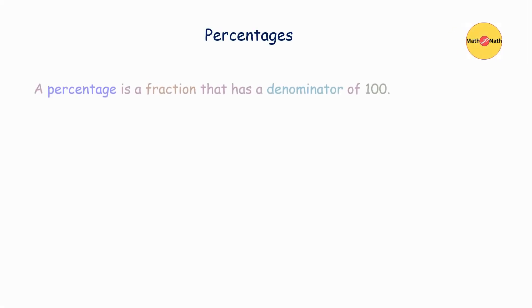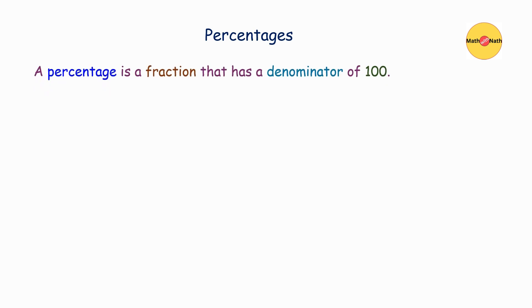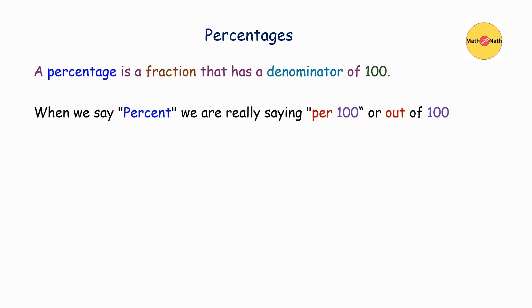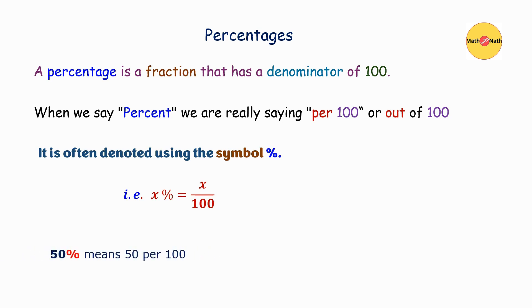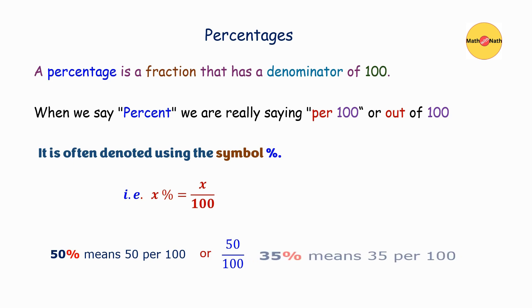A percentage is a fraction that has a denominator of 100. When we say percent, we are really saying per 100 or out of 100. It is often denoted using the percent symbol. For example, 50% means 50 per 100, or 50 over 100; 35% means 35 per 100, or 35 over 100.